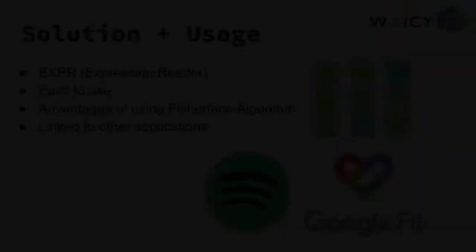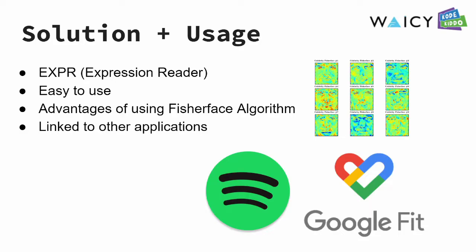The solution to this problem is EXPR, which is an AI-assisted face expression detection program. The idea itself is quite simple. Nowadays, many mobile phones have a face unlock feature that allows users to unlock their phones just by showing their faces. I plan to link this program with that phone security feature so that the user's expression can automatically be detected. In this way, the user doesn't have to worry about taking another photo.